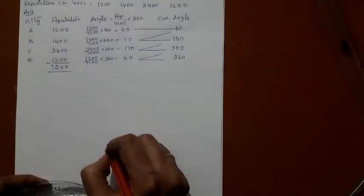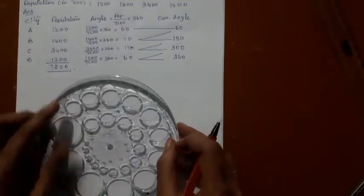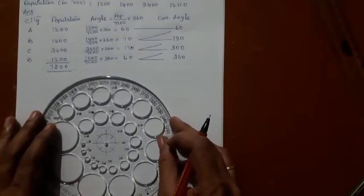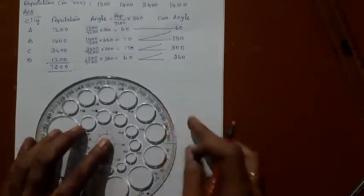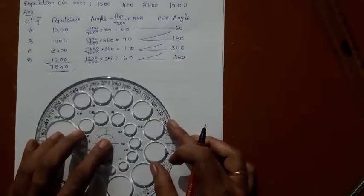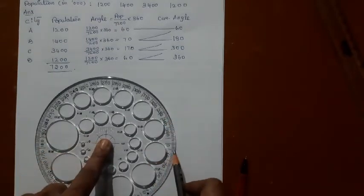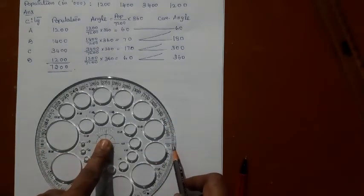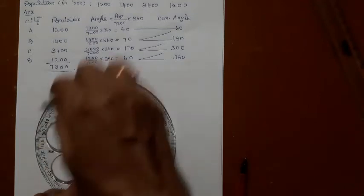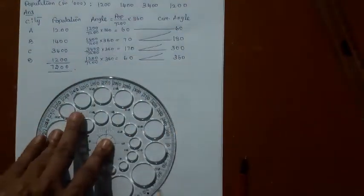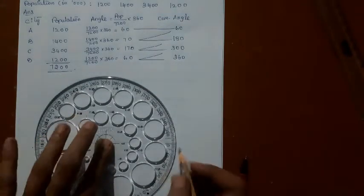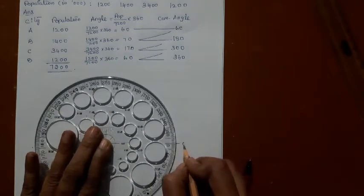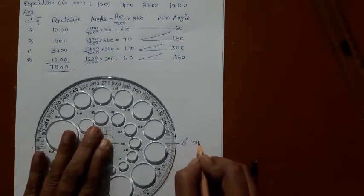I'm keeping the zero here. It is not necessary that you should have the zero here; you can place it anywhere. That is not an issue. Now start plotting the points. This is your zero. Zero degrees is also 360 degrees.